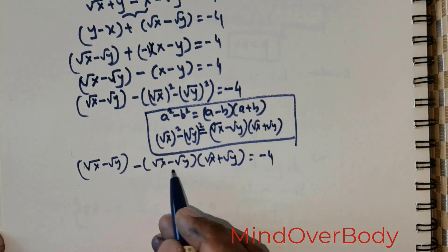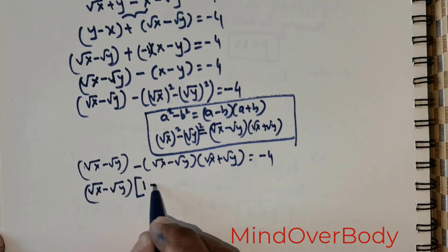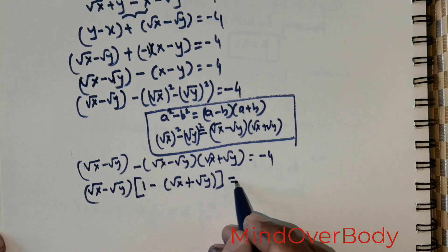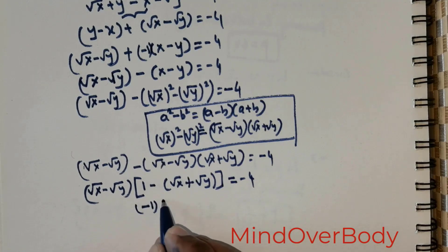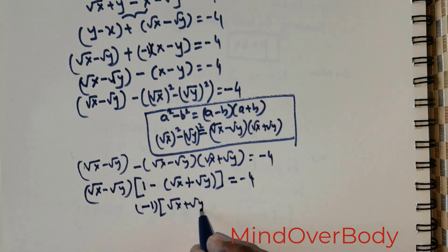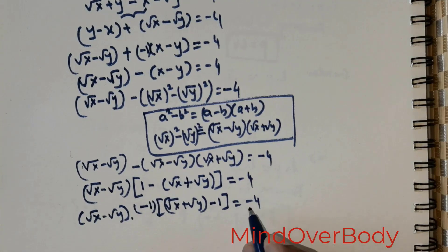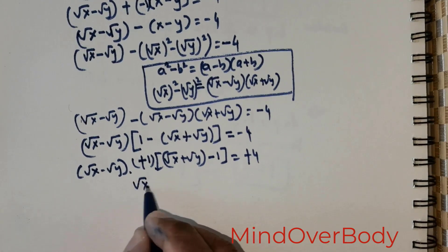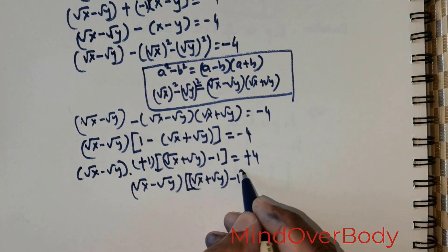So this is going to be: root of x minus root of y, rewritten as (root of x minus root of y) multiplied with (root of x plus root of y) equals negative 4. Now I've got root of x minus root of y appearing twice — I can take it as a common factor. That would give me (root of x minus root of y) times (1 minus (root of x plus root of y)) equals negative 4. To get rid of the negative, I take the negative sign out, giving me (root of x minus root of y) times (root of x plus root of y minus 1) equals positive 4.